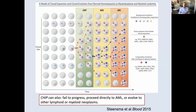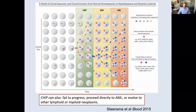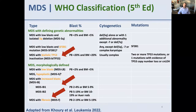If those mutations continue to happen, myelodysplastic syndromes can evolve into acute myeloid leukemia, or AML. That is much more common in people who have higher risk MDS than lower risk MDS. That's the distinction between lower and higher risk MDS.